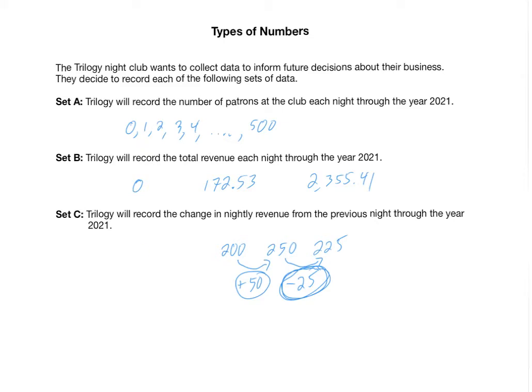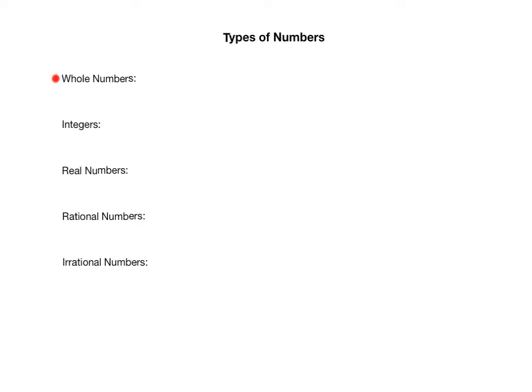Each of these three sets deals with different types of numbers. That's why we have different types of numbers, and we need to define them precisely so that we can do our algebra. The five types of numbers you're going to be responsible for in this algebra class are: whole numbers, integers, real numbers, rational numbers, and irrational numbers.